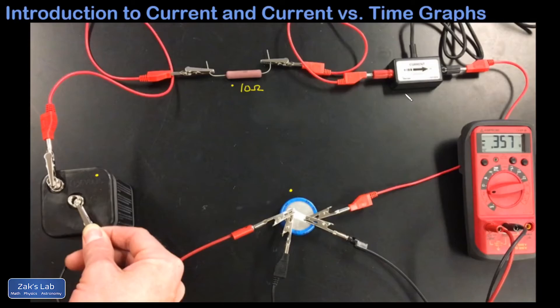In series with this circuit is a current probe that talks to a piece of software that's going to plot current as a function of time. And then we attach to the positive terminal of the capacitor.